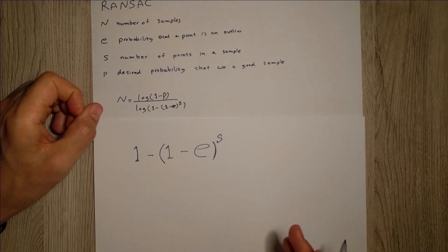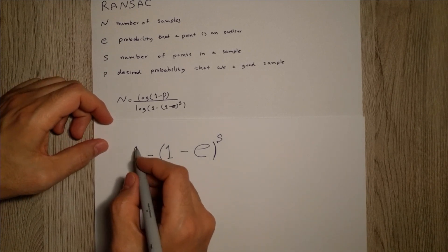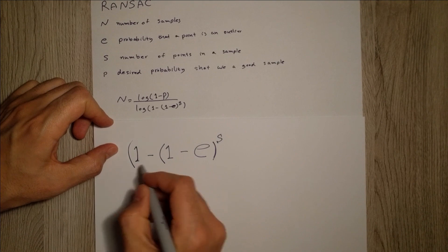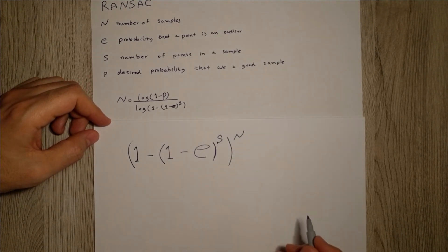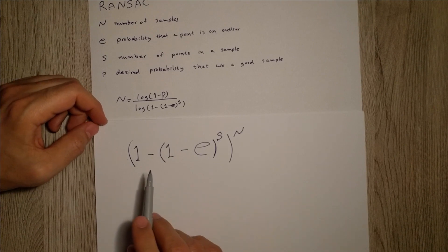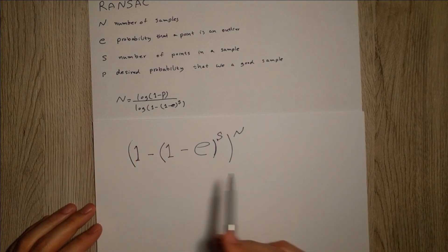Okay, and how many samples are we choosing? N. So this is the problem. And again it's a joint probability.